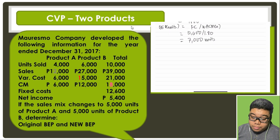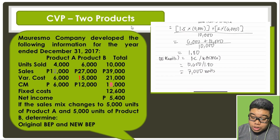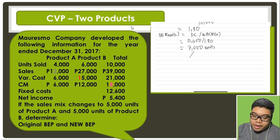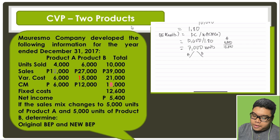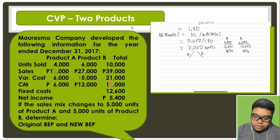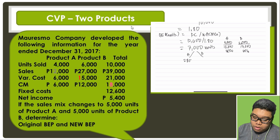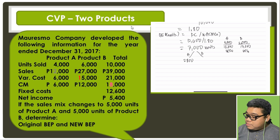How much of those 7,000 units pertains to product A and product B? We can determine that with their mix ratio. For product A, that is 4,000 over 10,000 — so 40% of the mix. For product B, that is 6,000 over 10,000 — so 60% of the mix. So on the 7,000 units, product A is 7,000 times 0.4, which is 2,800; and product B is 7,000 times 0.6, which is 4,200.